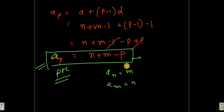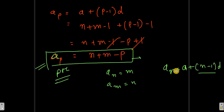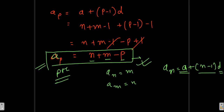Normally we know that a_n equals a plus (n minus 1) into d, so to find any nth term we need to know a and d. But the importance of this proof is that there is no need of a and d — we can find the pth term using just the values n, m, and p. I hope it is clear how we can find the pth term of a sequence if the nth term is m and the mth term is n. If you have any doubt, please comment down below. Thanks for watching.